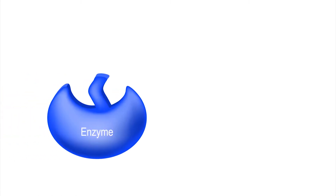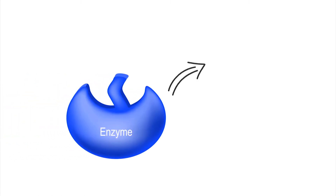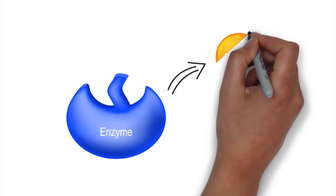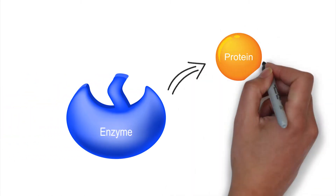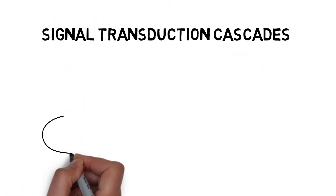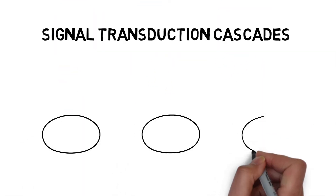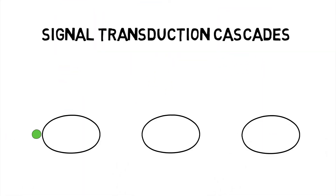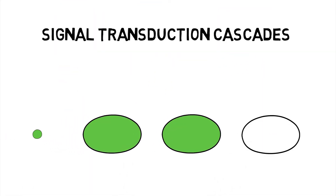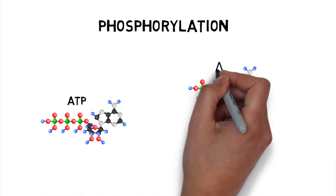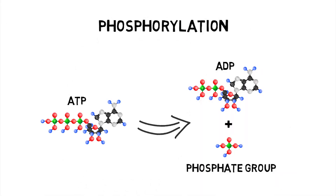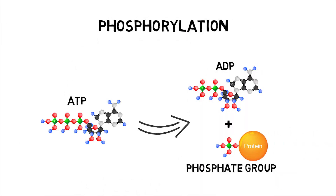Tyrosine kinases are enzymes that are responsible for the activation of many proteins. This activation occurs through a series of molecular events known as signal transduction cascades and results in the addition of a phosphate group to the protein, a process known as phosphorylation.